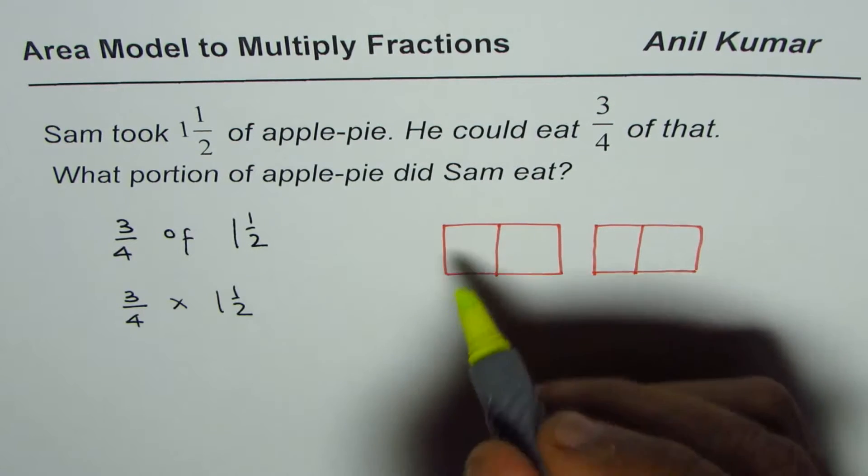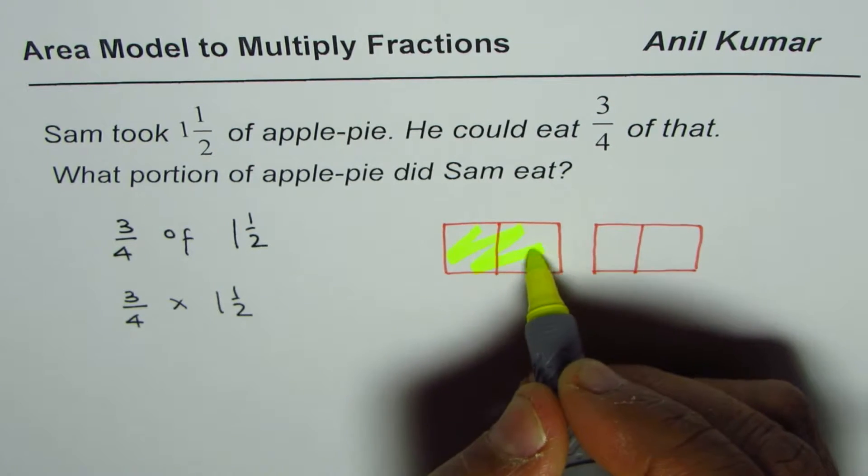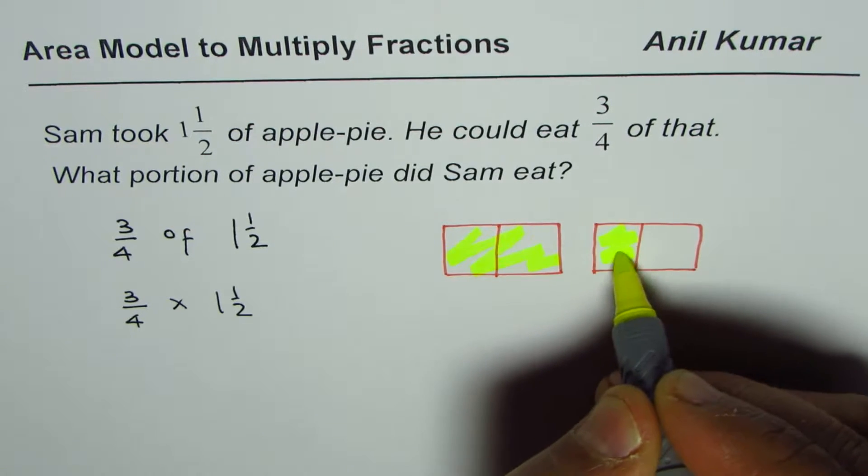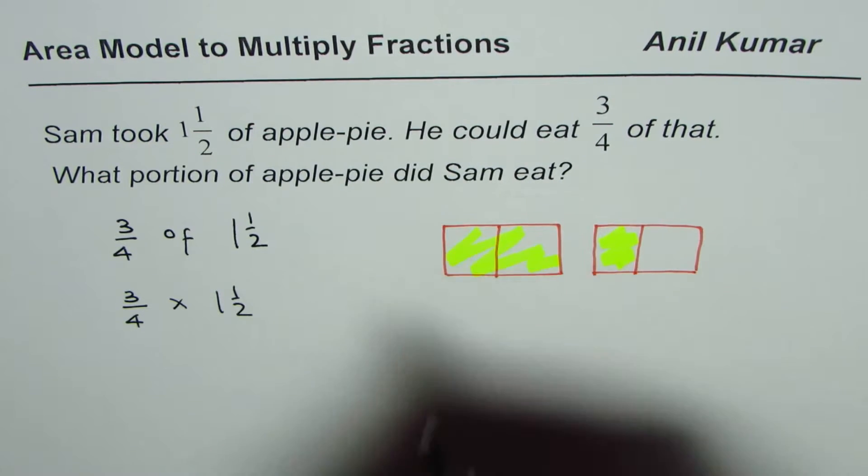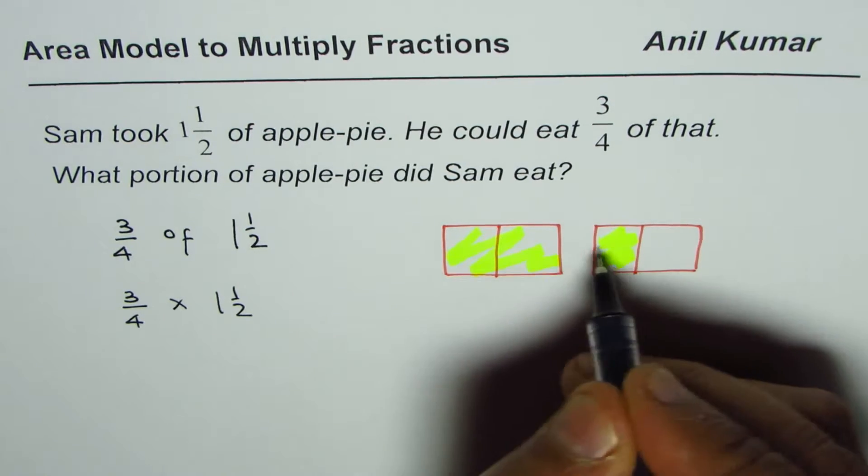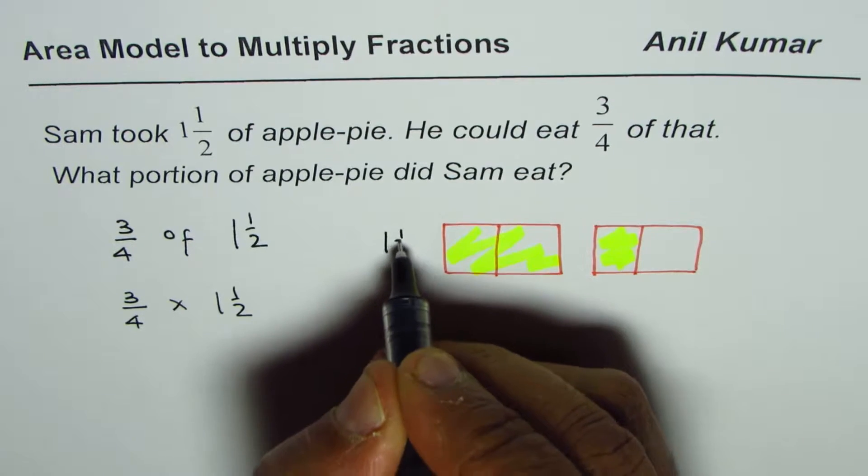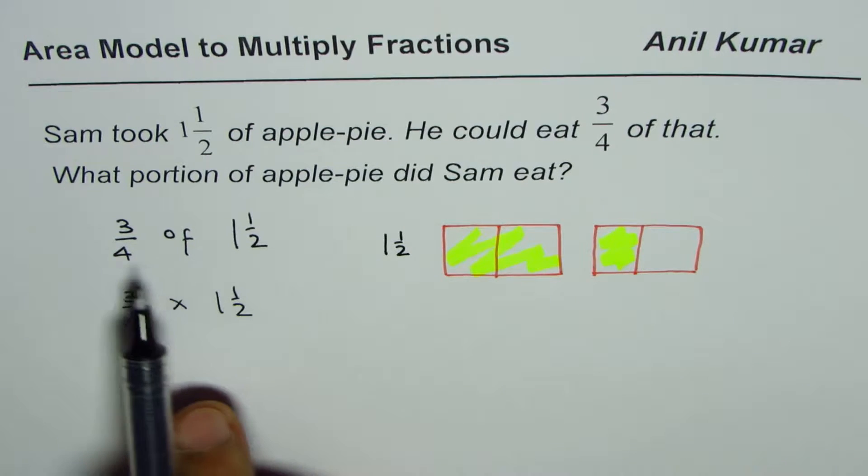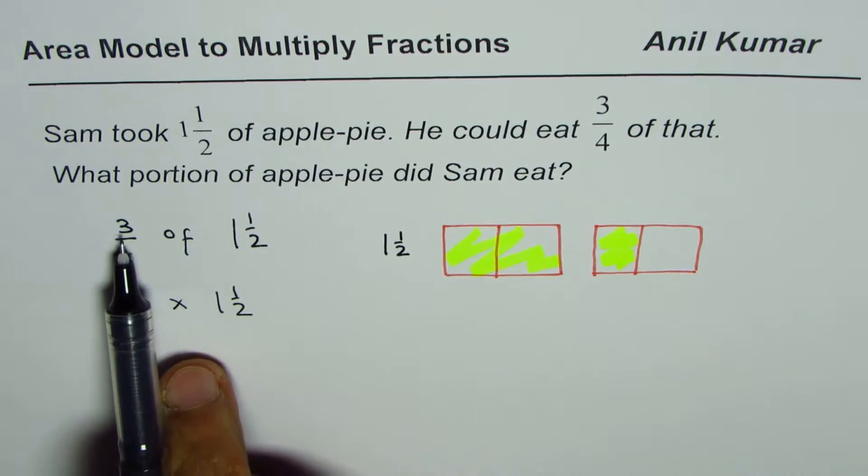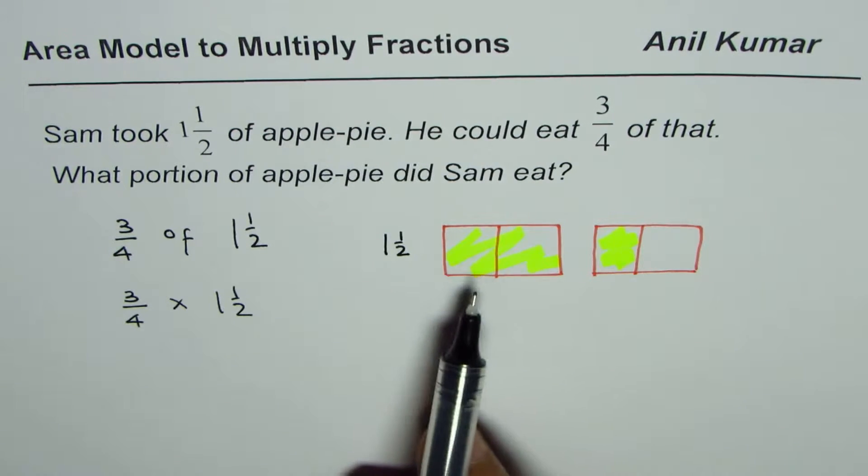When I say select one and a half, that means select one whole. So we selected one whole. That is the apple pie selected, and we'll call this as one and a half. So this is one and a half apple pie selected.